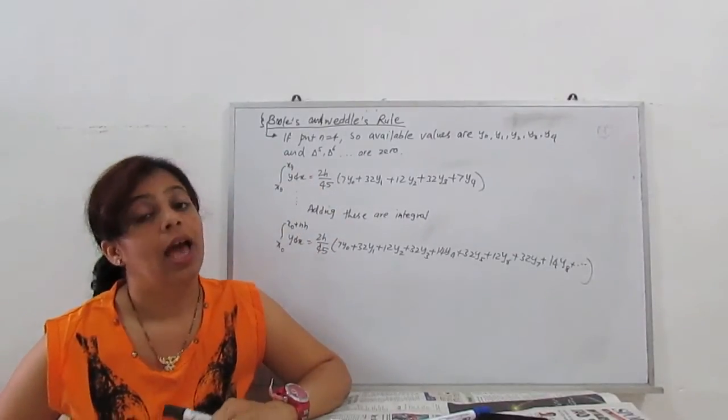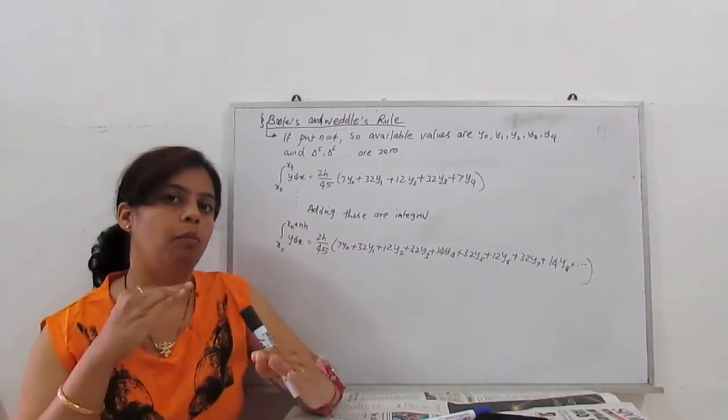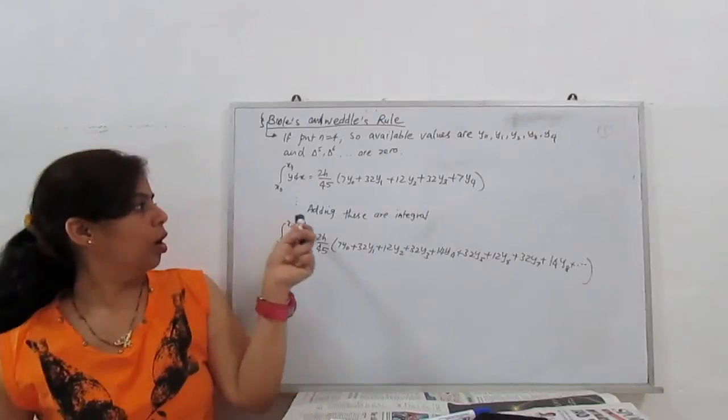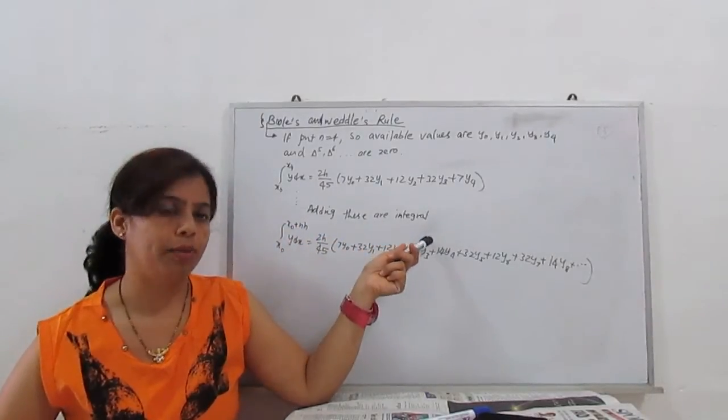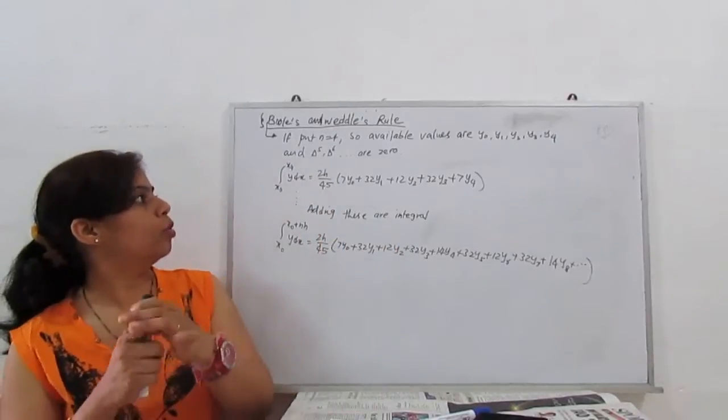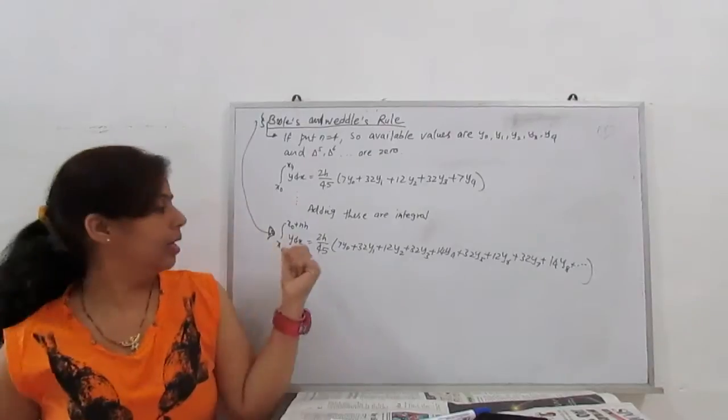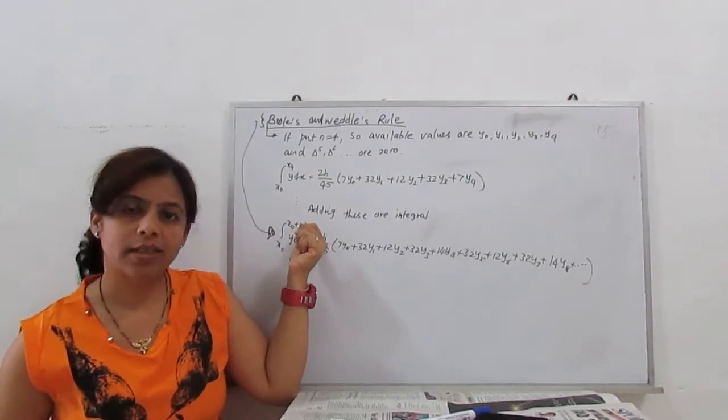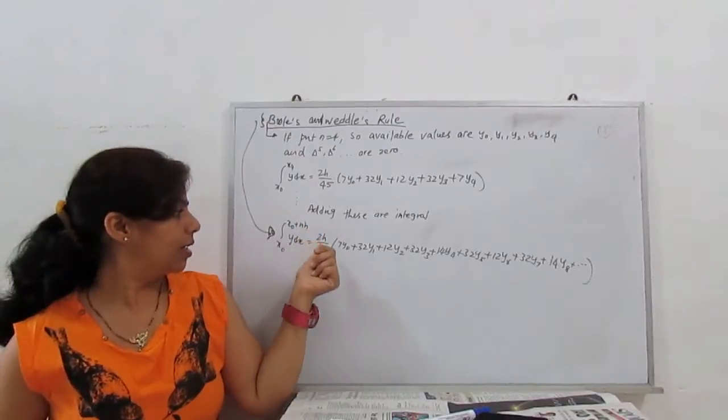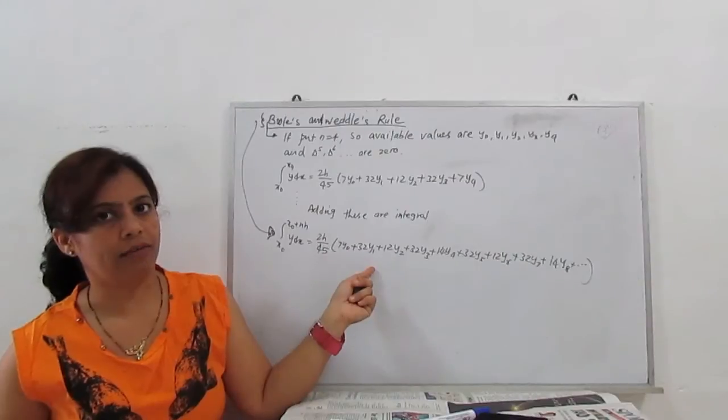Next interval is x4, and when we sum all the values, adding these all integrals, our general formula, which is called Boulez rule or Boulez integral formula, is given by: integral x0 to x0 plus nh, y dx equals 2h by 45, 7y0, 32y1, 12y2, 32y3...